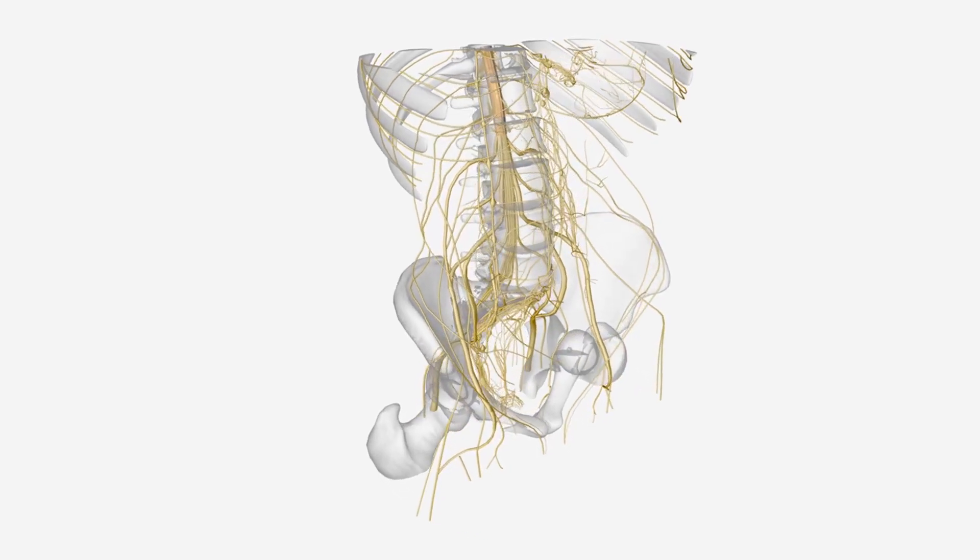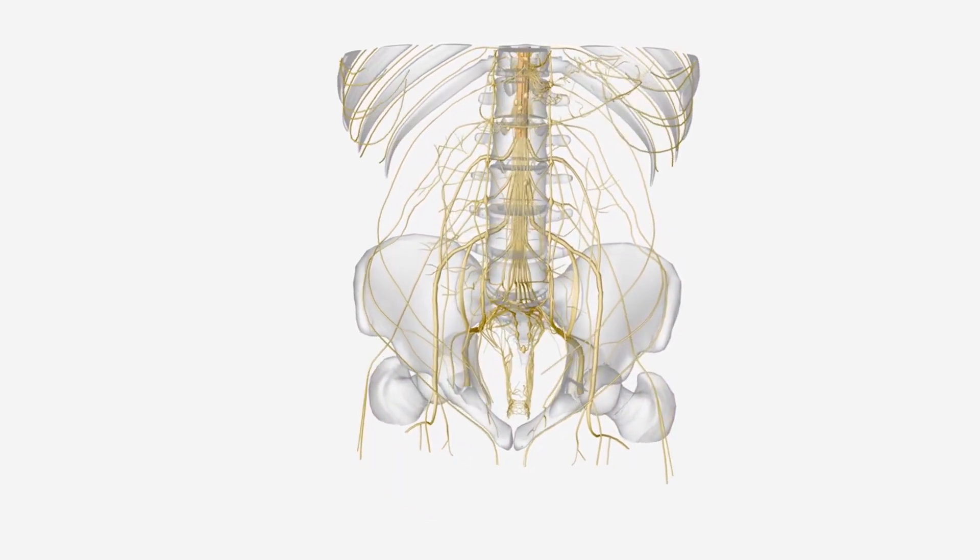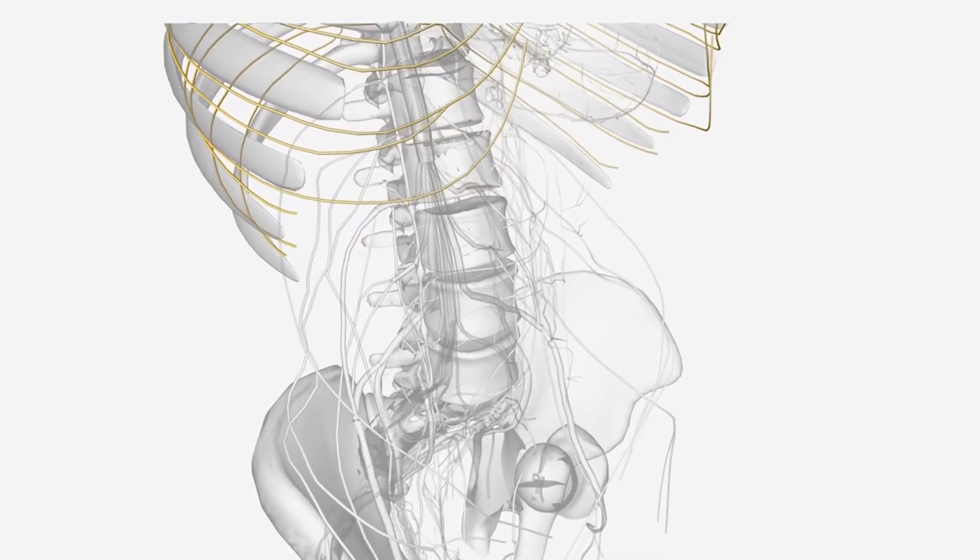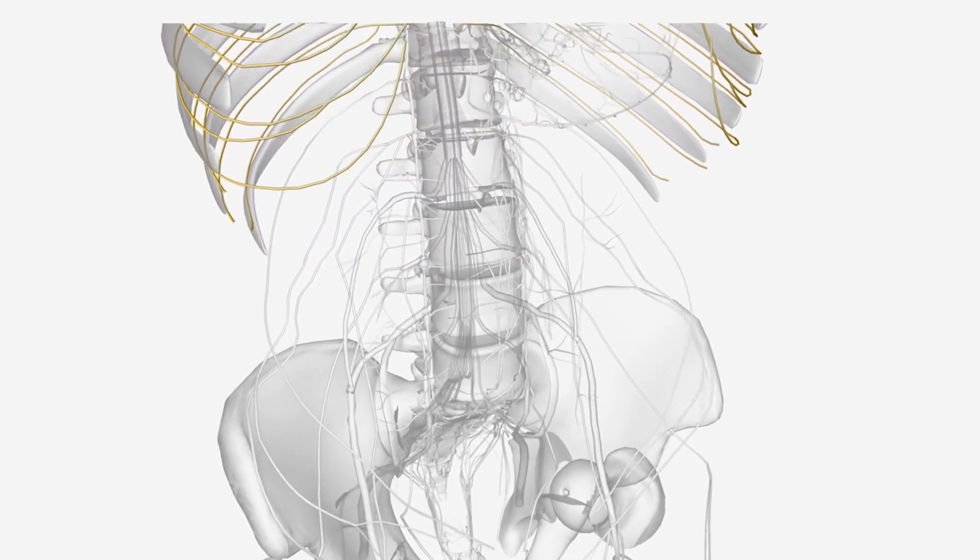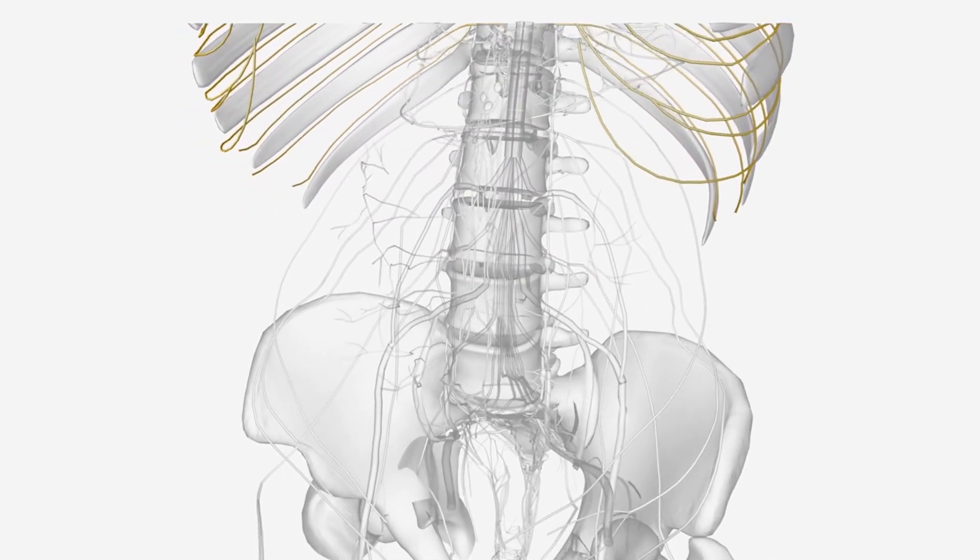The peripheral nervous system is like a vast network of nerves connecting the central nervous system to the rest of the body. It has two main parts: the somatic nervous system, which controls voluntary movements, and the autonomic nervous system, which regulates involuntary functions.